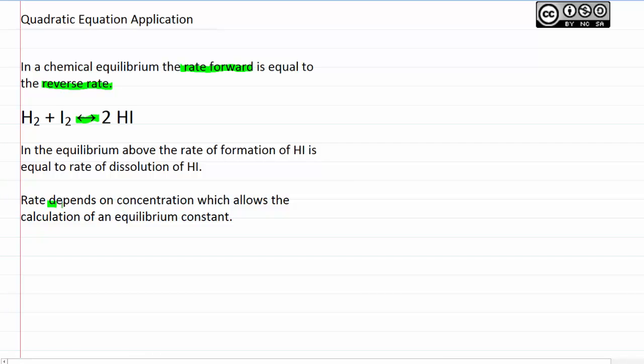The rate does depend on the concentration, and that lets us calculate rates, which lets us calculate an equilibrium constant. So let's start out with the idea that the rate forward equals the rate back, and the rate forward is going to be equal to the concentration of the reactants, which are H2 and I2, times some constant. I'm going to call that Kf, and the reverse rate is going to be equal now to Kr times the concentration of HI, but there's two HIs, so we're going to have to have HI times HI concentrations.